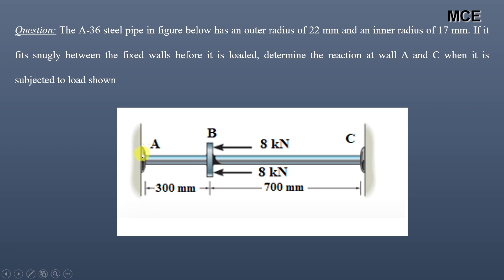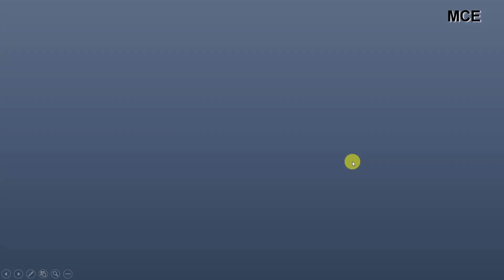You can see the steel pipe which is fixed at A and C, and two 8 kN forces are applied at B. The portion AB has a length of 300 mm and portion BC has a length of 700 mm. We have to find the reactions — that is, the fixed reactions at wall A and C.